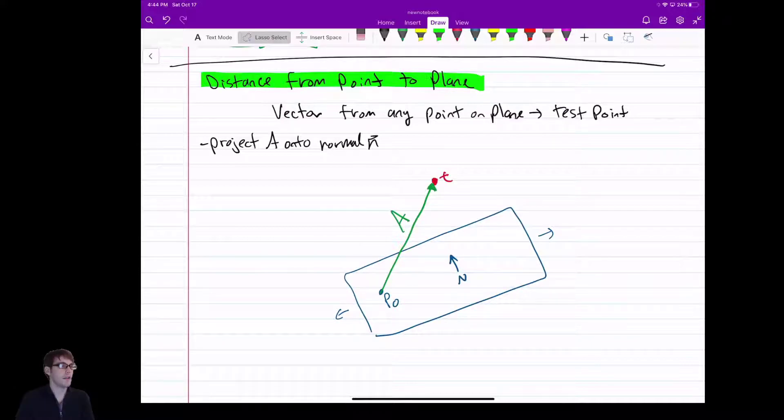So we project A onto the normal N, and then if we do a scalar projection, we get the length of it for free. So we take the length of the projection, the scalar projection. And that gives us our distance.